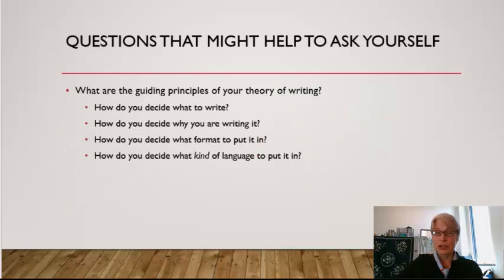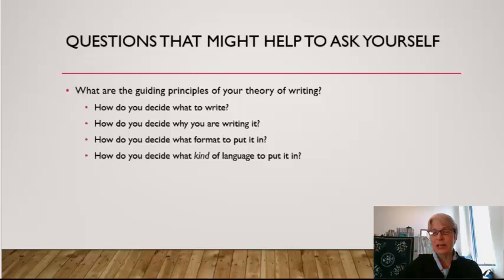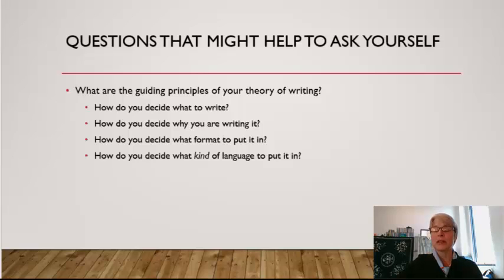Questions that might help you to ask yourself can be: how do you decide what to write, how do you decide why you're writing it, how you decide what format to put it in, and how do you decide what kind of language to put it in. These are all choices that you need to make as you're creating a piece of writing, and these are things that you probably think about, and you have principles that will help you make these decisions. That's part of your theory of writing.